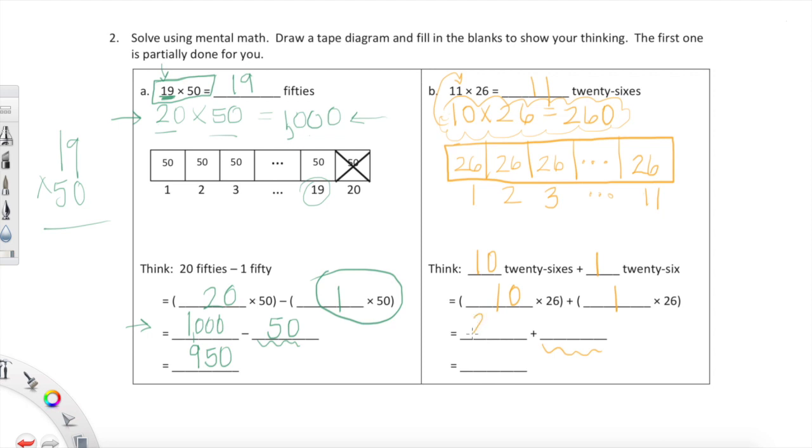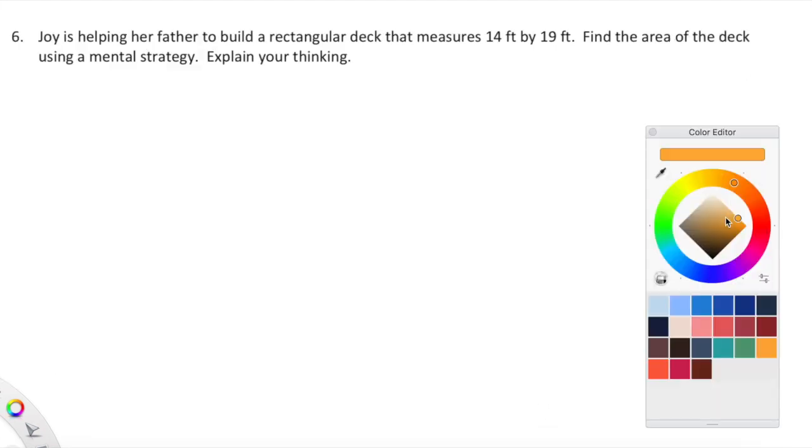10 times 26 is 260. 1 times 26 is 26. Now we can add 260 and 26. I can do that horizontally: 286. If that's not working for you horizontally, there's no shame in doing it vertically. 0 plus 6 is 6, 6 plus 2 is 8, 2 plus nothing is 2. So we used a mental strategy to solve 11 times 26. Pretty cool stuff.